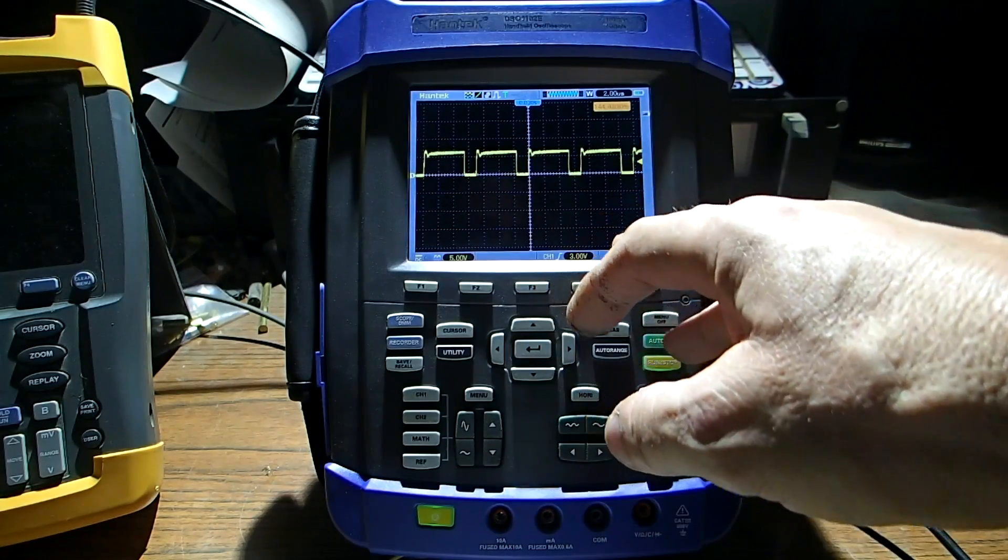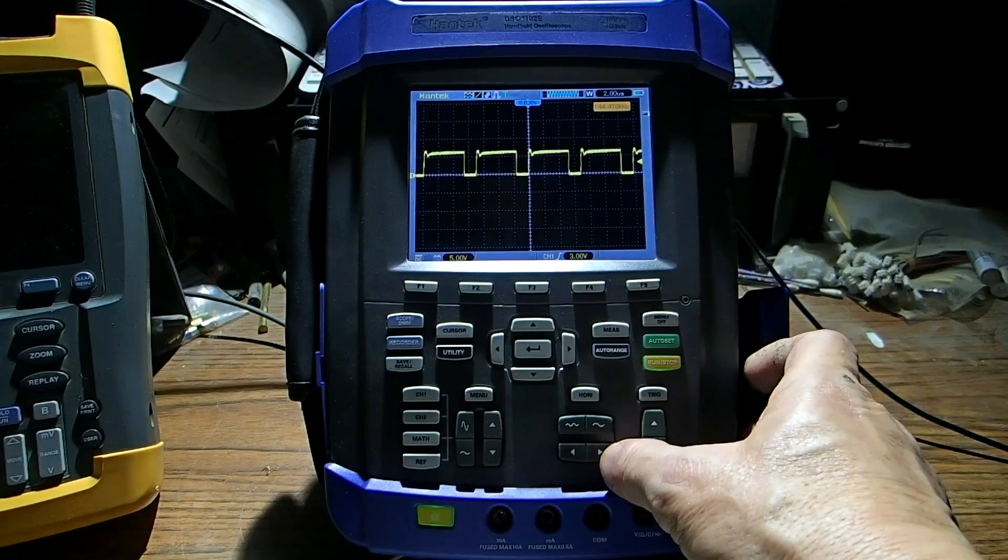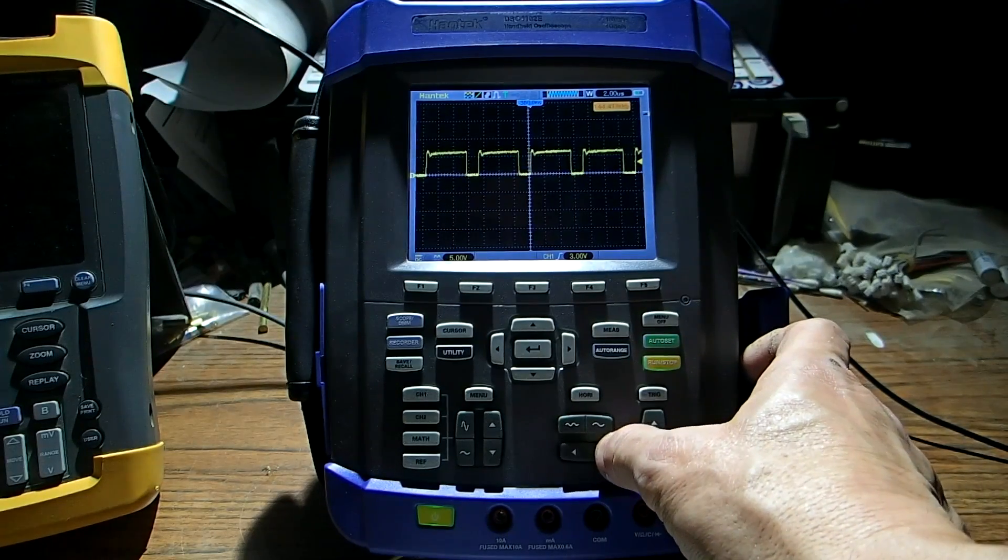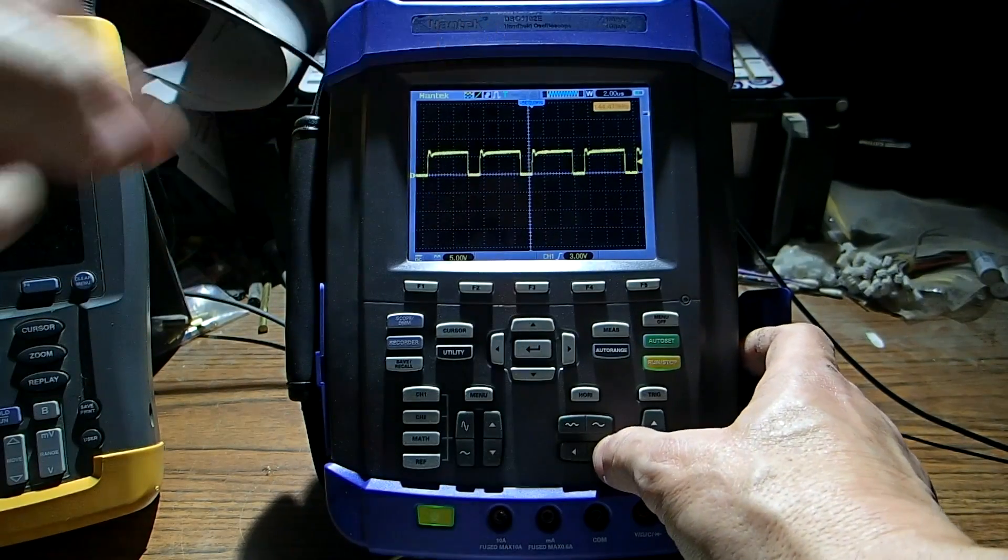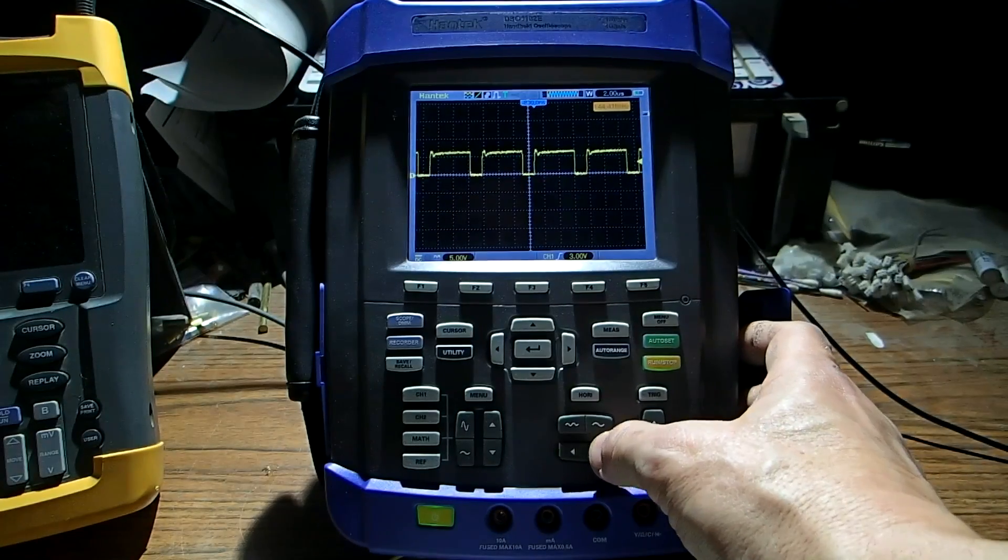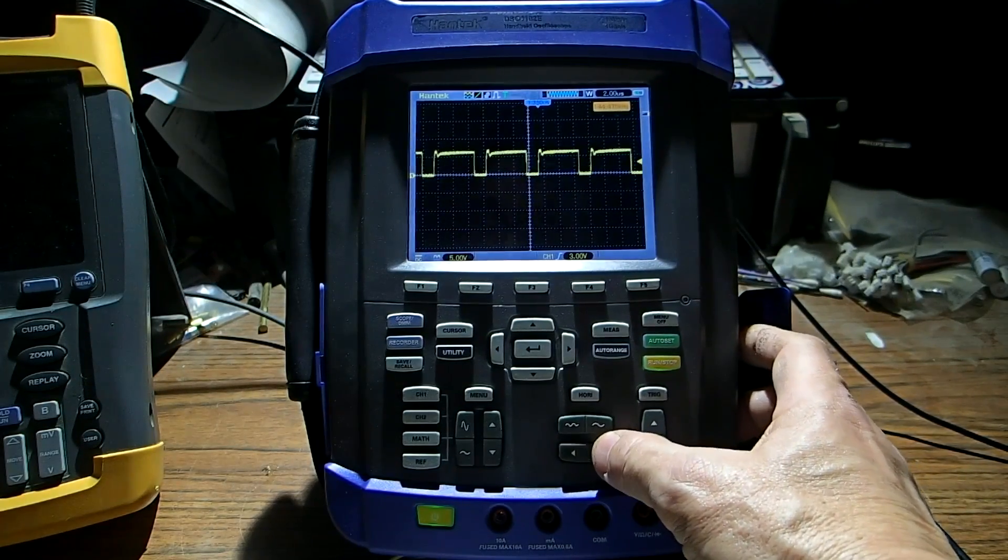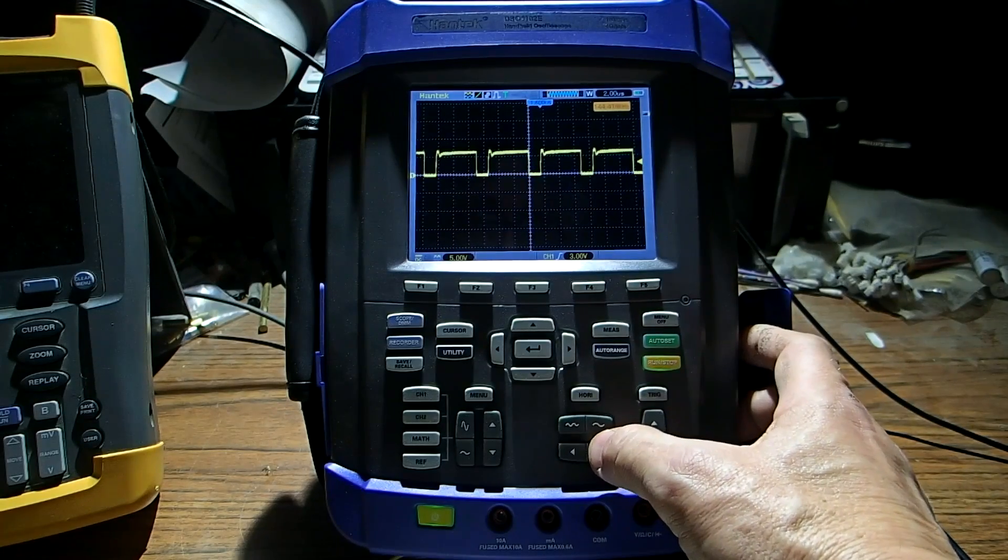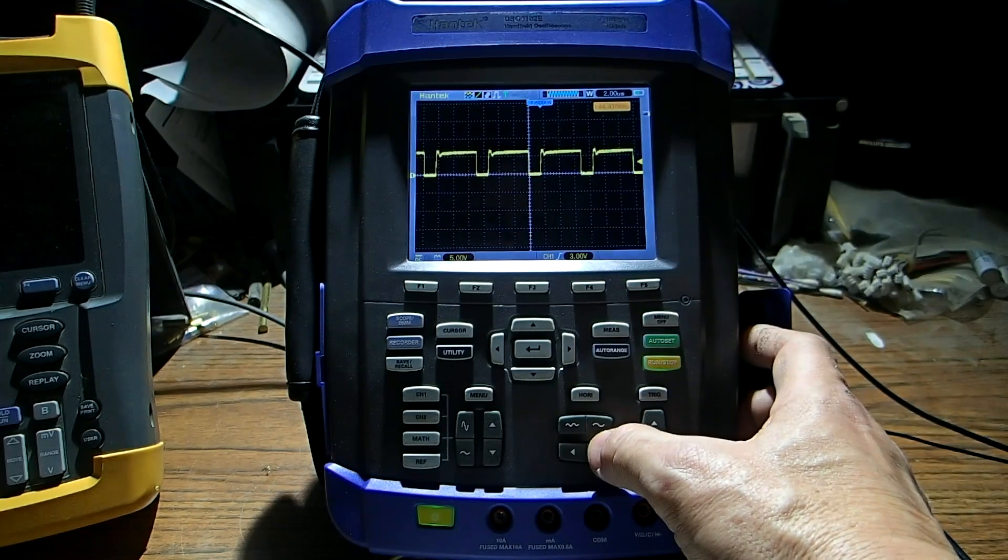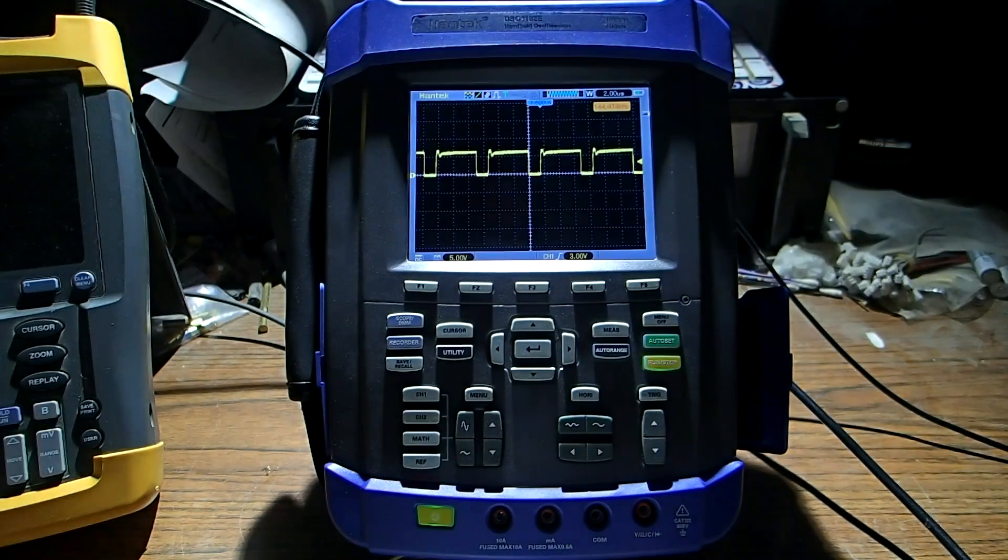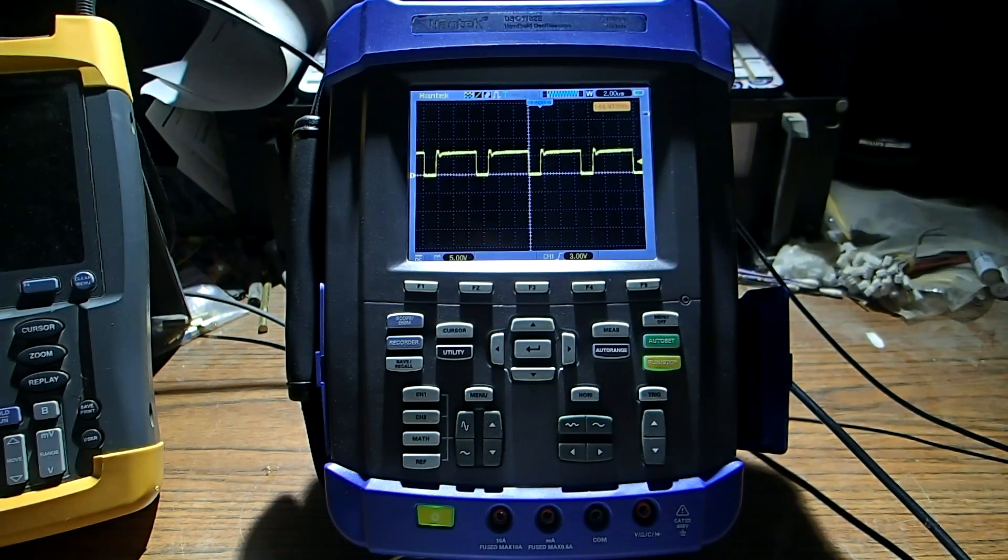Plus, besides that, if you just move this because of the center line, you can tell how wide your pulse width just by using that little quick feature right there. This has got 1.6 microseconds. That's pretty handy.